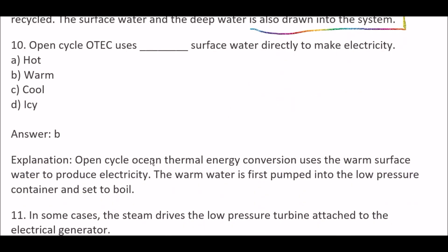Next question: In open cycle OTEC, it uses blank surface water directly to make electricity — Option A, hot; Option B, warm; Option C, cool; Option D, icy. Right answer is Option B, warm. Open cycle OTEC uses warm surface water to produce electricity. The warm water is first pumped into a low pressure container and set to boil.